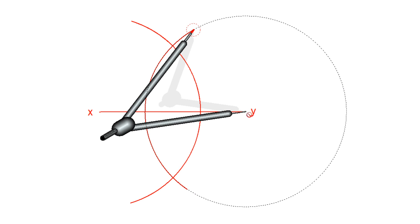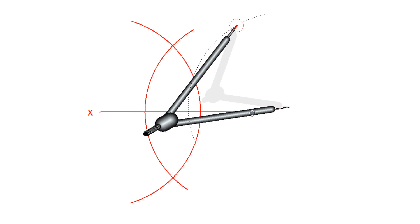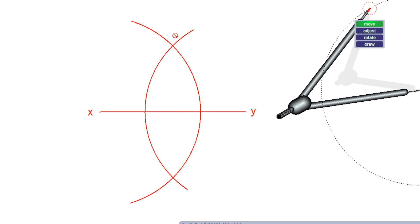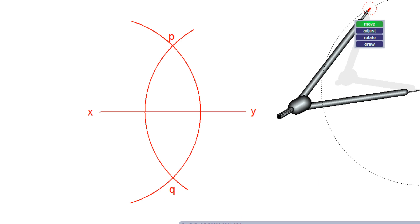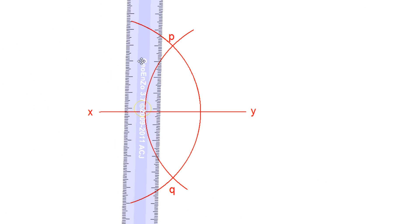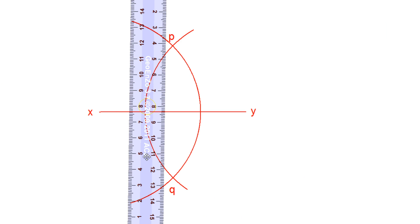The arcs are cutting each other — let's say this point is P and the other side is Q. Now connect P and Q. Once the naming is completed, the next step is to connect them using a scale.